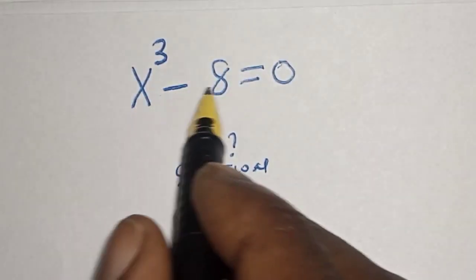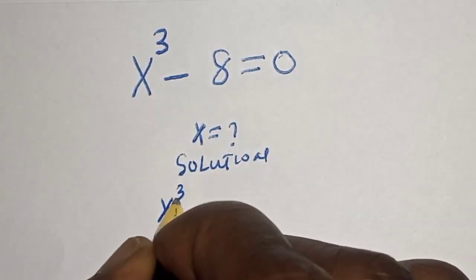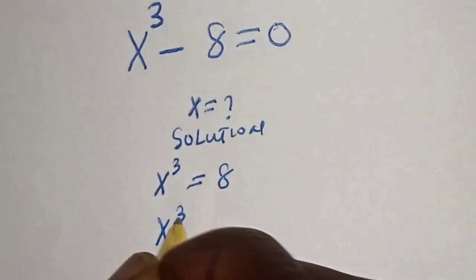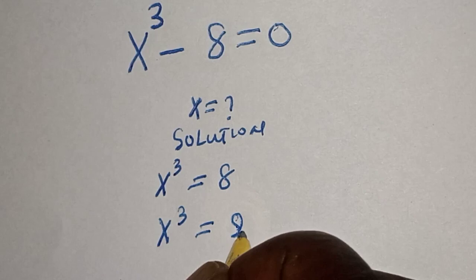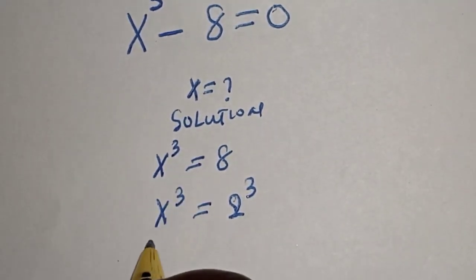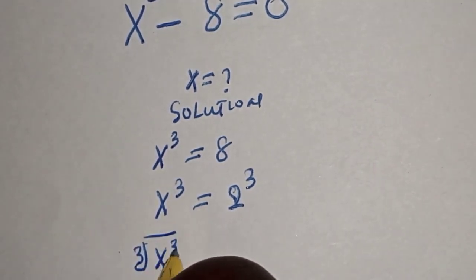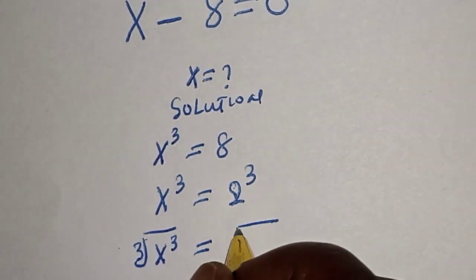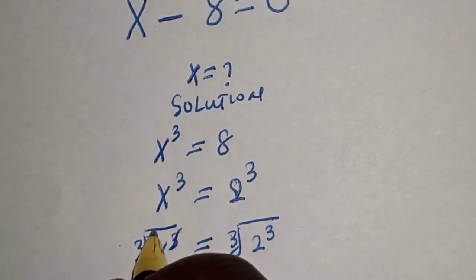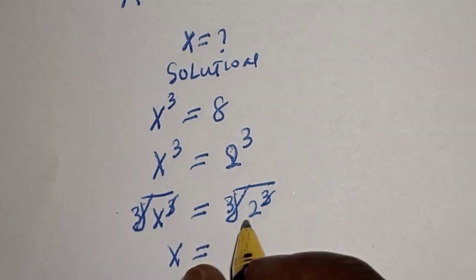The question is s raised to power 3 minus 8 is equal to 0. Let's solve this way: s raised to power 3 is equal to 8, then s raised to power 3 is equal to 2 raised to power 3. Now let's take the cube root of both sides. Cube root of s raised to power 3 is equal to cube root of 2 raised to power 3. This cancels this, and this cancels this. So s is equal to 2.